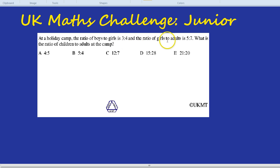And the ratio of girls to adults is 5 to 7. So for every 5 girls you get 7 adults. What is the ratio of children to adults at the camp?